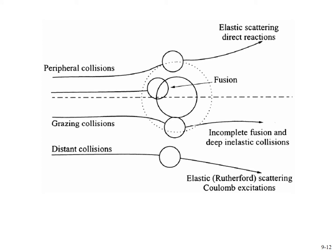Heavy ion reactions are needed for reaching the predicted island of stability in the heavy element regime, at Z=114 and N=184. In an overview of heavy ion collisions: there are primarily elastic scattering collisions, distant collisions producing Coulomb excitation, transfer reactions as the particle comes closer, deep inelastic collisions, and finally fusion leading to compound nucleus formation. Cross-sections decrease as you go from reactions requiring less complete nuclear interaction toward full compound nucleus formation.